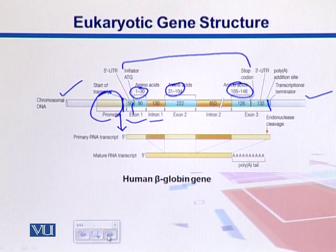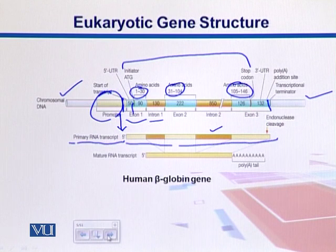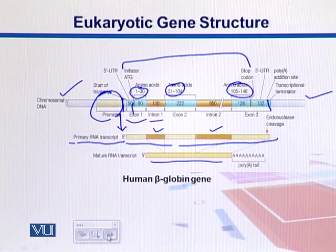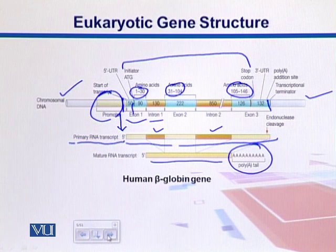After transcription, the transcript is called the primary transcript. The primary transcript contains those introns, which are later removed through a process called splicing, and then we find a mature RNA transcript. That transcript is then translated into proteins. This mature messenger RNA transcript is also recognized by the presence of a poly-A tail — a long run of A's at the end.